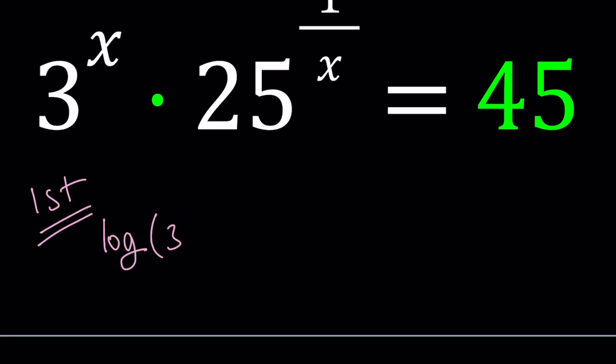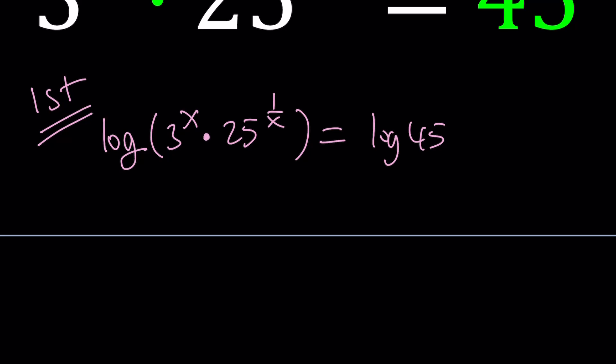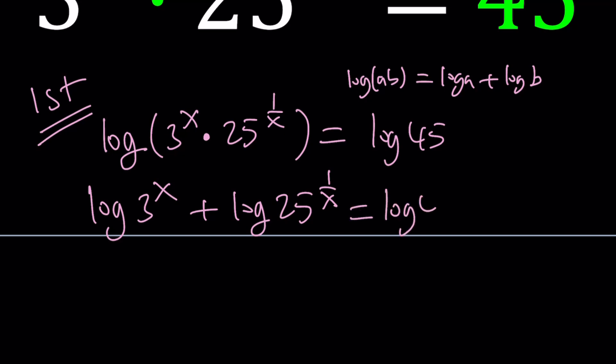I'm going to go ahead and log both sides with base 10. And I'm not writing base 10. And then we have a product. The log of a product can be written as the log of sum, a log of a sum. So we can write it like this. In other words, log AB can be written as log A plus log B. That's one of the properties. And log 45 at this point, I'm going to leave it like that for now. And later on, we can actually break it down if needed.